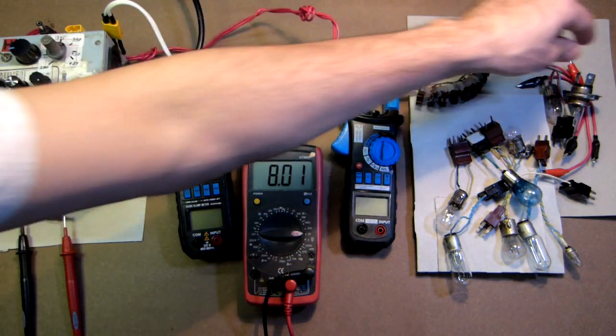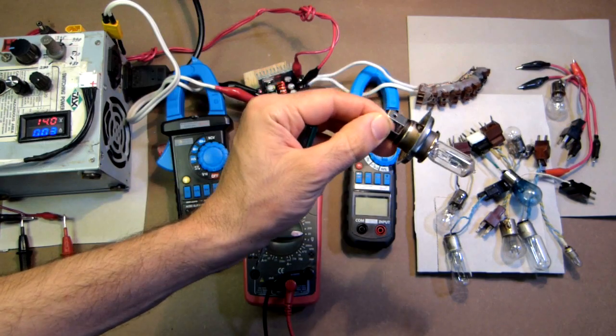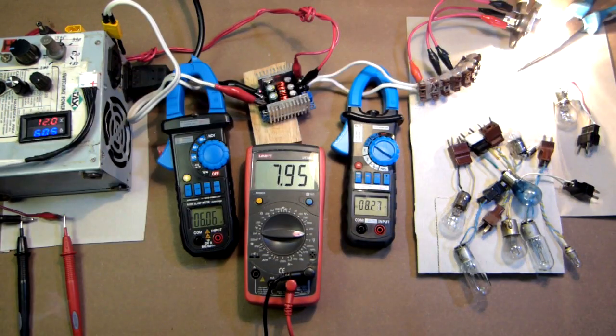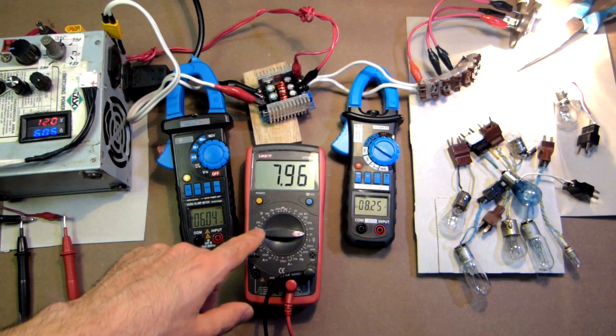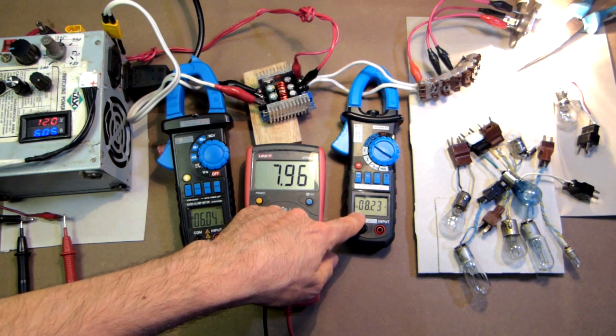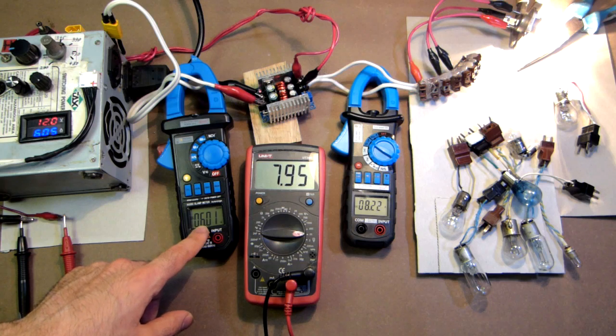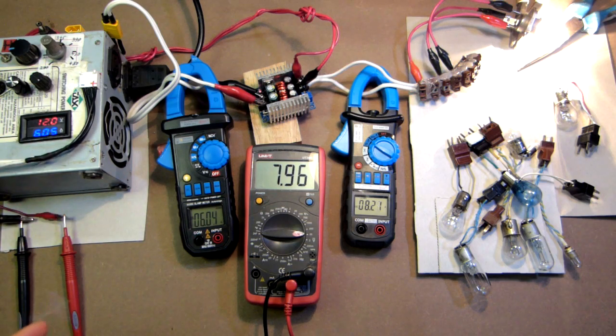First of all let's connect this car bulb, which is the most powerful one among these bulbs. So now we have connected two car bulbs. Here we have approximately 8 volts and here approximately 8 amps. On the input we have 6 amps, here also 6 amps. Let's increase the load.